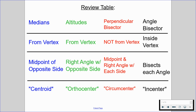Lastly, angle bisectors start inside the vertex, bisect each angle, and their point of intersection is called the incenter. You will need to know all of this, so make sure you have it written down — these are crucial to succeed in this section. Great job, keep it up, and let us know if you have any questions.